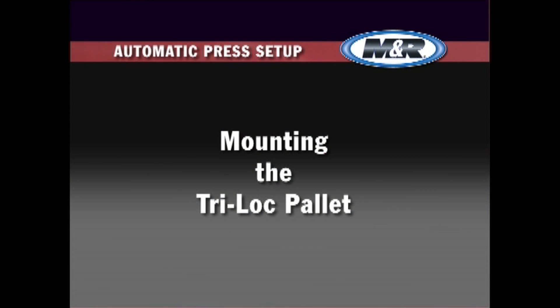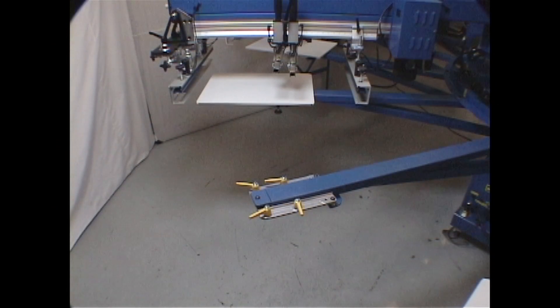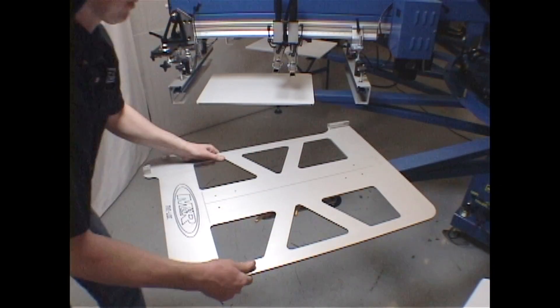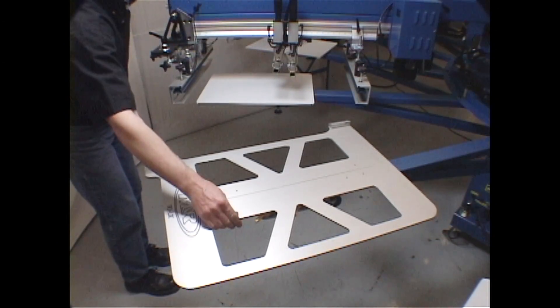On presses equipped with front and rear frame holders, Tri-Lock pallet location is based on the position of the front frame holder. Choose one print arm and remove the standard print pallet. Mount the Tri-Lock pallet in its place. Do not tighten the pallet locks at this point.